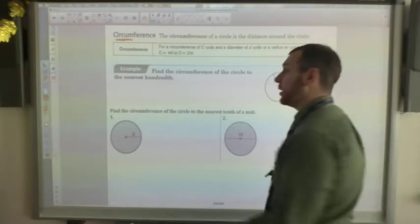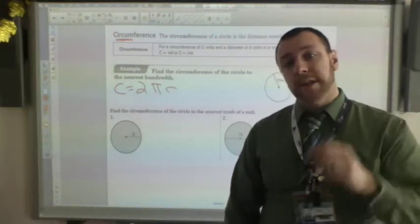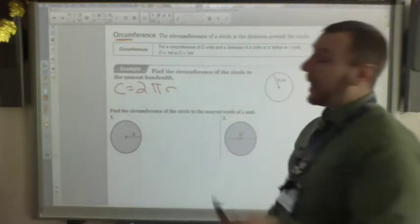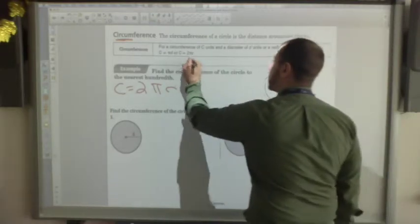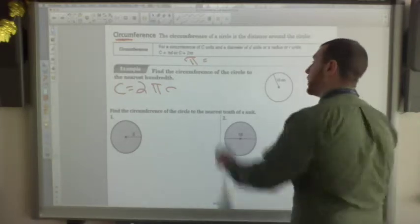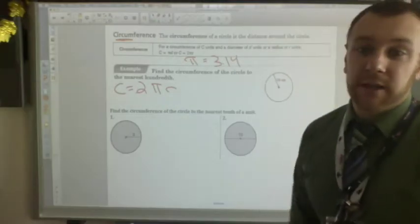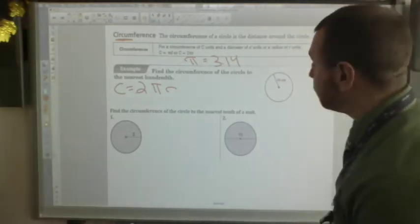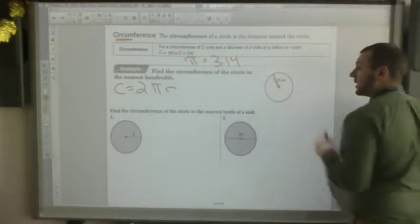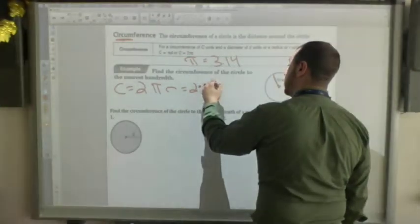To find the circumference, we use a formula. It's C equals 2 pi r. 2 pi r means 2 times pi times r, where r is the radius. Pi, you might remember, is approximately, and we say approximately because pi is an irrational number, so the decimal places go on forever. 3.14, and you can hit the pi button on your calculator, and it gives you, I think, about 9 decimal places. To find the circumference, you notice that it's going from the center to the outside, so that's my radius. What I'm going to do is 2 times pi times 13.